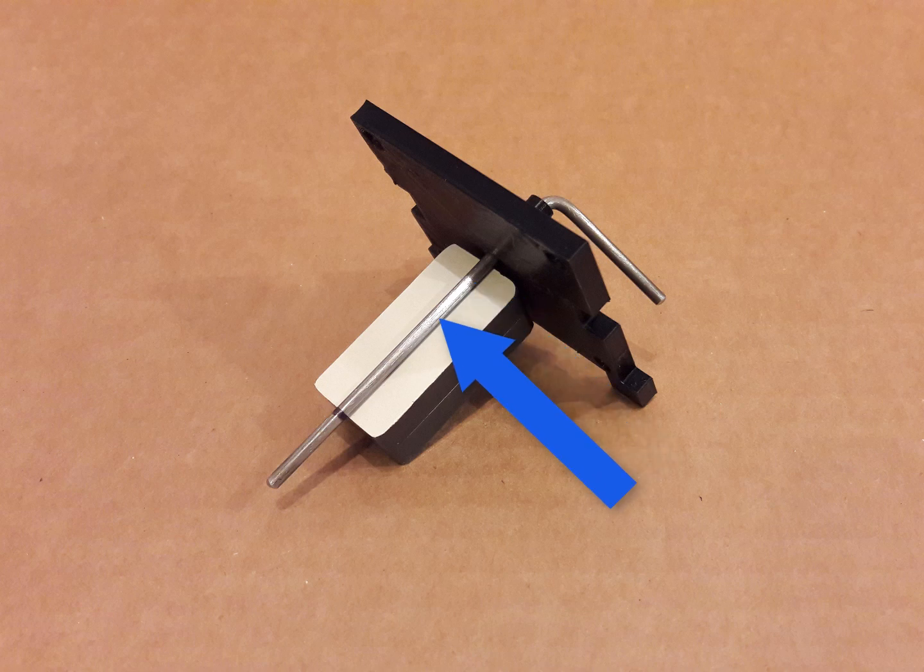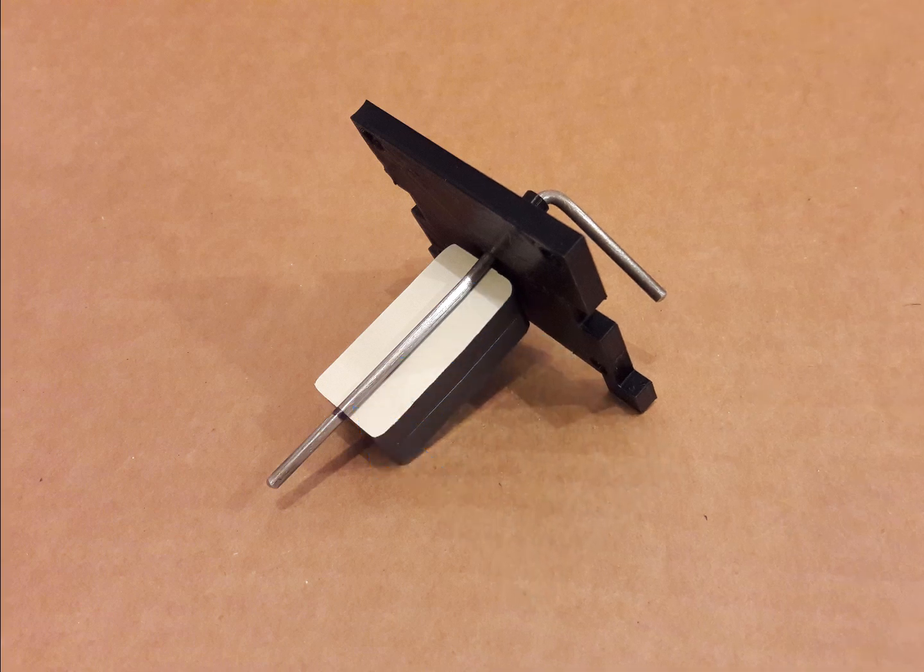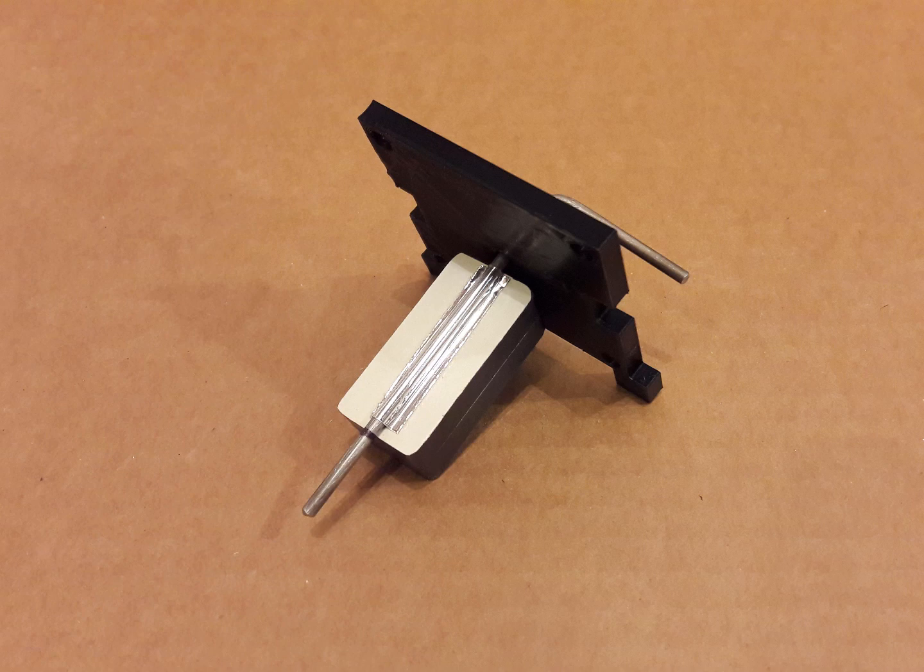Note that the hand crank is centered over the magnet stack. Peel off the adhesive cover on the long piece of metal tape. Center the tape lengthwise along the hand crank and then press the metal tape onto the white tape. The metal tape will cover the hand crank and partially cover the white tape.